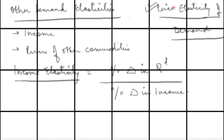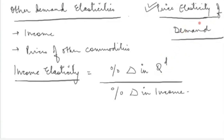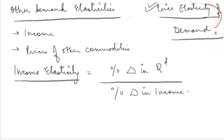The elasticity term is divided into three parts. The first term tells you the denominator — the factor with respect to which you are studying the change. For example, price elasticity has 'price' as the first term. The middle term is 'elasticity.' The last term, such as 'demand,' tells you the numerator. So the term preceding 'elasticity' is the denominator, and the term succeeding 'elasticity' is the numerator.